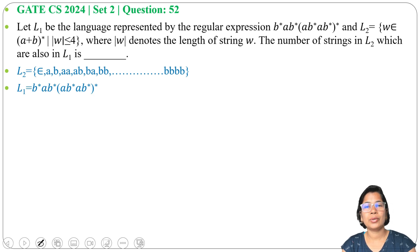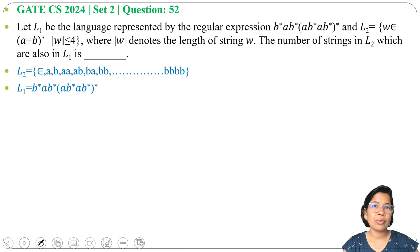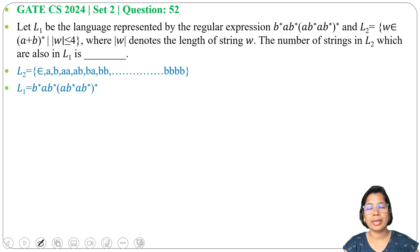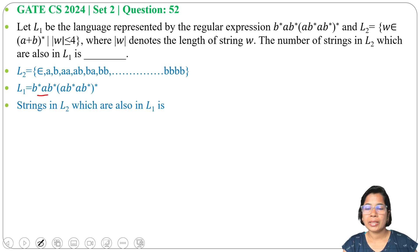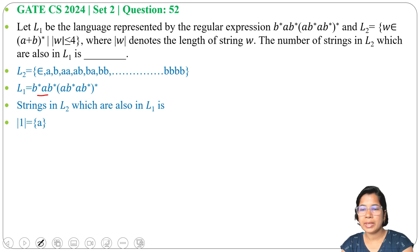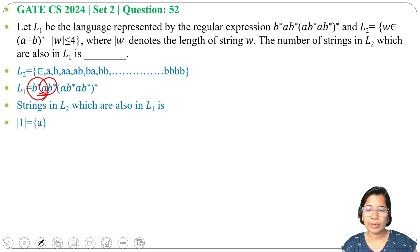First, checking for length 1: there is only one string we can generate that is in both L1 and L2, which is A. So for length 1 we have only A. For length 2, strings over {A, B} of length 2 that are also in L1 are AB or BA, so only 2 strings of length 2 can be generated.